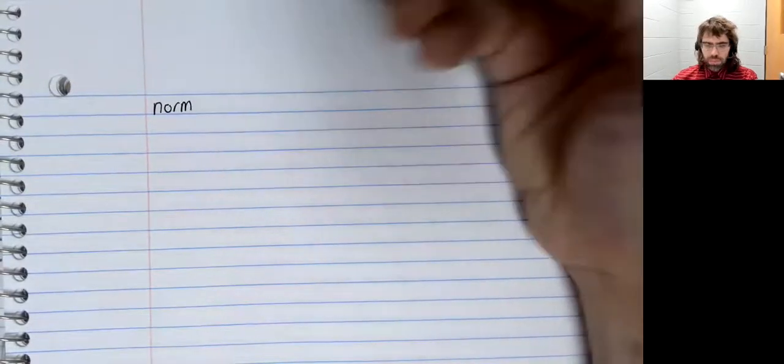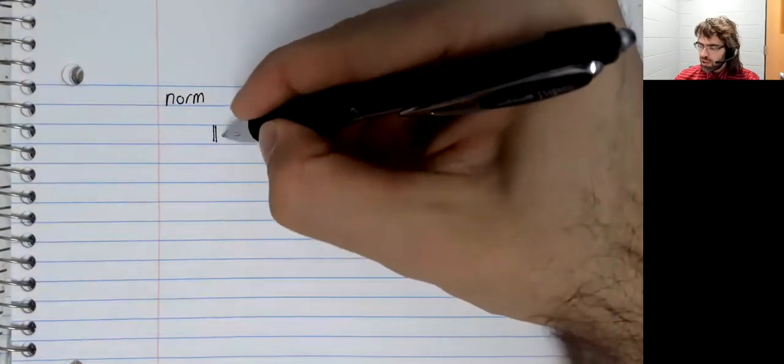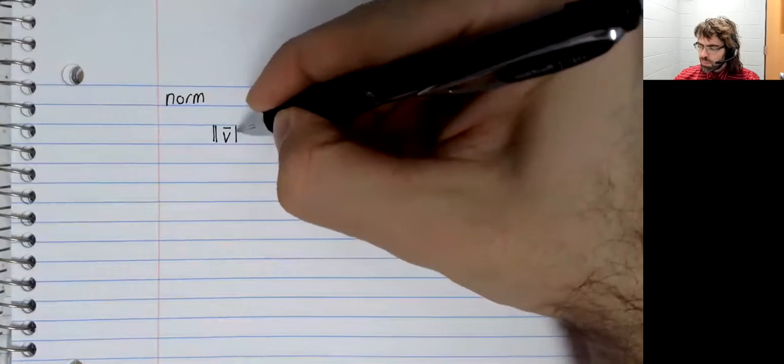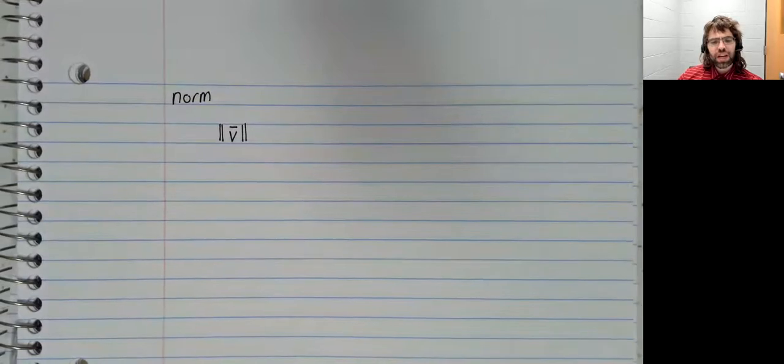We'll use the dot product to define another concept called the norm. The norm of a vector is represented in this way, sort of like an absolute value except two vertical bars.